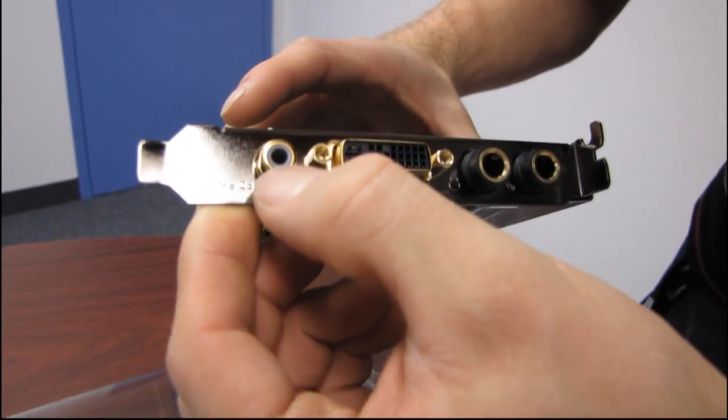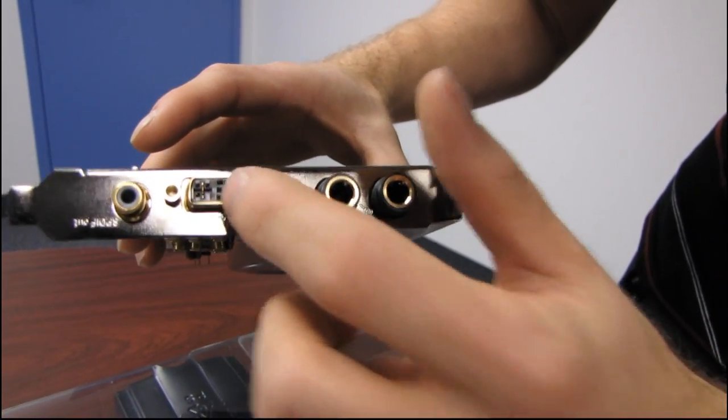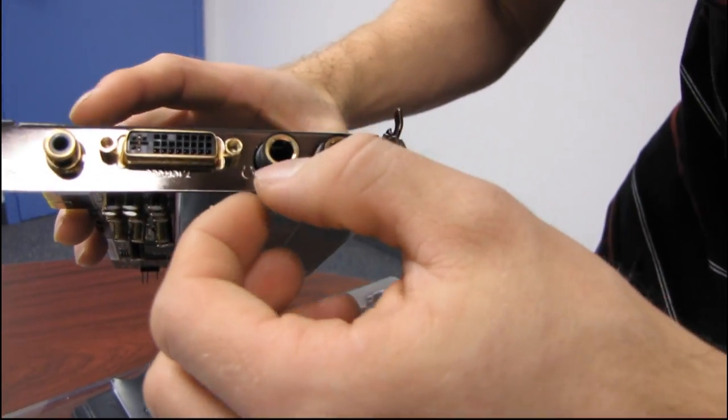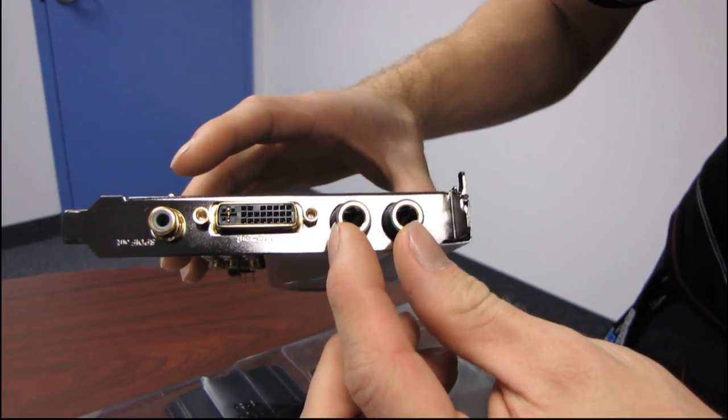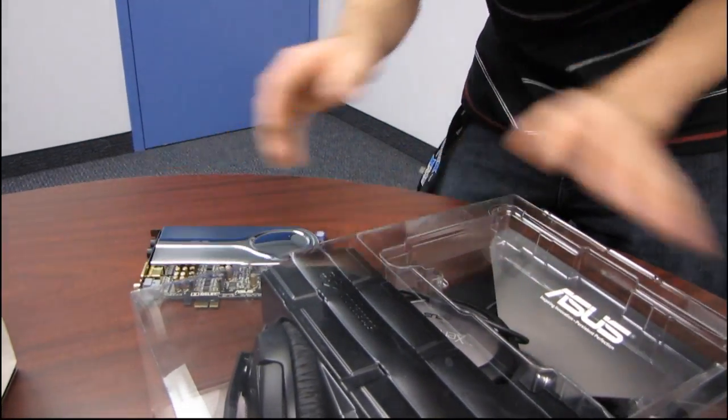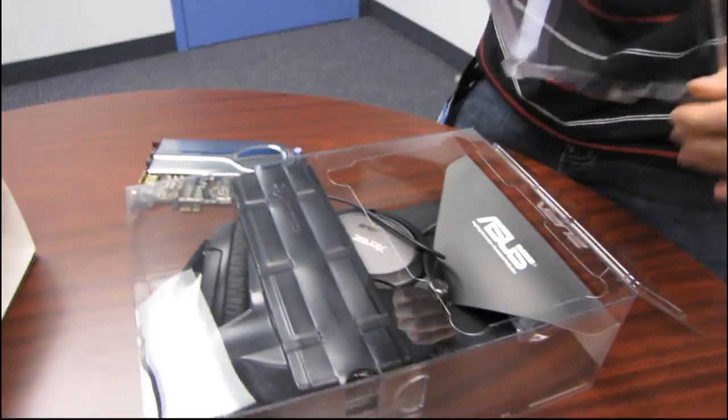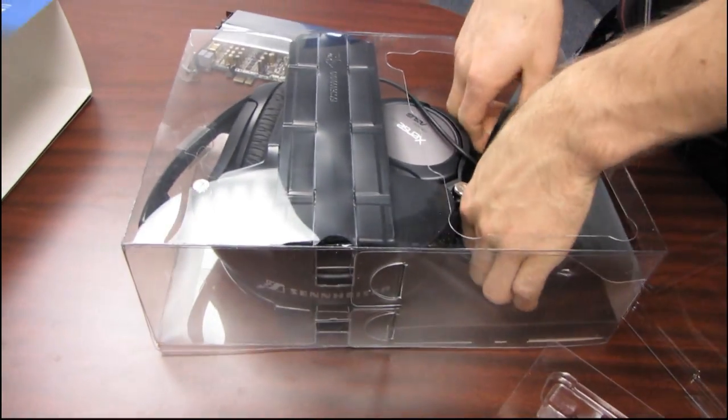Here we've got SPDIF output, so that's your digital out. Here we've got 7.1 out, and I'm probably going to find an adapter somewhere to show you how to use that. Then we have our headphone as well as our microphone. Now please note, these are the larger audio jacks, not the ones that you typically find on the back of a sound card.